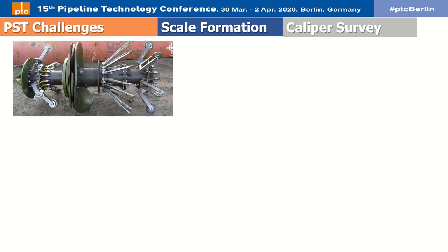The configuration for the 32-inch caliper pig used had 16 caliper arms and two odometer distance measurement wheels. The 16 caliper arms activated eight caliper sensors — two arms per sensor. The aim of the caliper survey was to report the location and approximate quantity of calcium carbonate deposits formed within the pipeline as an unwanted consequence of pH stabilization.